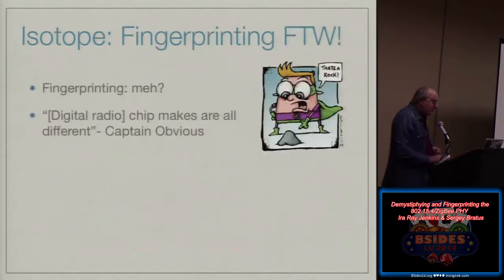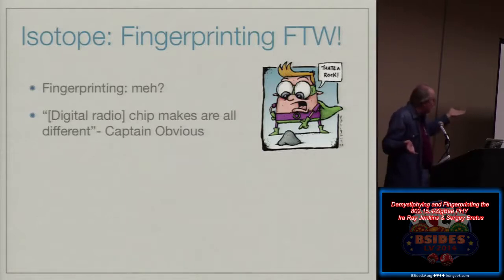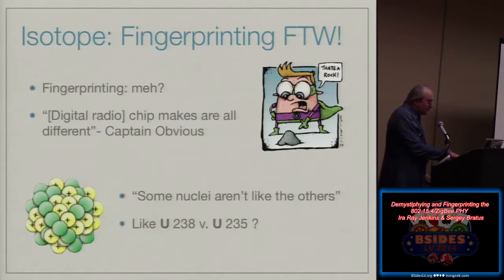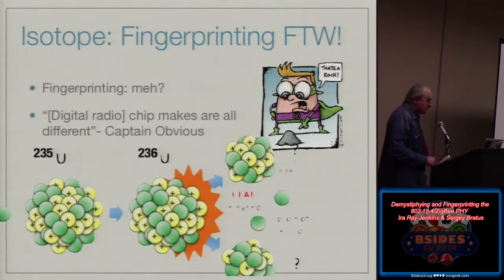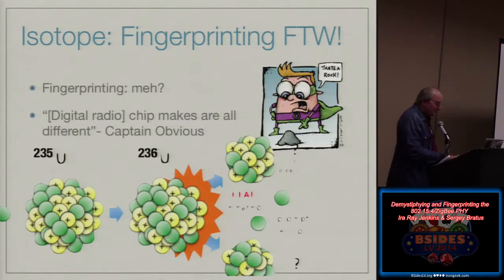We had this argument with Travis — he said fingerprinting, meh, Captain Obvious. Of course radio chips are all different. But then you think about who else looked at how basic elements differ: nuclei differ in the number of neutrons — still the same element, just a heavier kernel. Who cares? Until it turns out that you actually do care, and you discover a thing that goes boom — the chain reaction, the nuke. So we call our fingerprinting system Isotope for that reason.